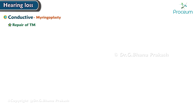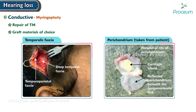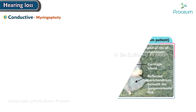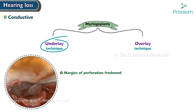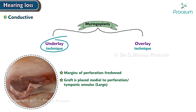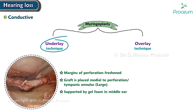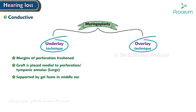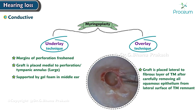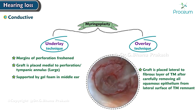Myringoplasty is the repair of the tympanic membrane. The graft material of choice is temporalis fascia or perichondrium taken from the patient. Sometimes homografts such as dura, vein fascia, or cadaveric tympanic membrane are also used. The repair can be done by two techniques: the underlay or the overlay. In the underlay technique, the margins of perforation are freshened and the graft is placed medial to the perforation or tympanic annulus if large, and is supported by gel foam in the middle ear. In the overlay technique, the graft is placed lateral to the fibrous layer of the tympanic membrane after carefully removing all squamous epithelium from the lateral surface of the tympanic membrane remnant.